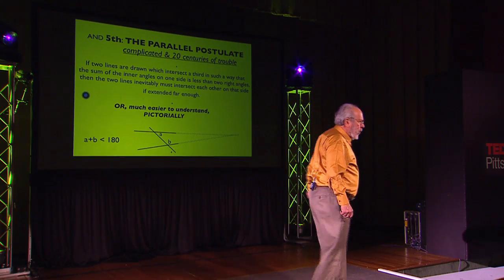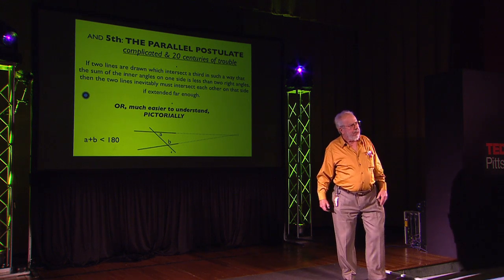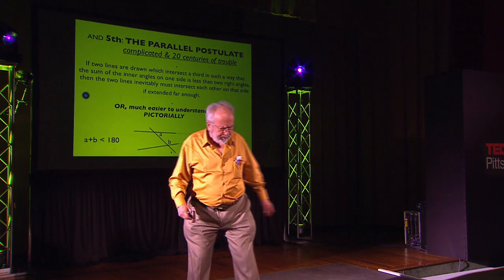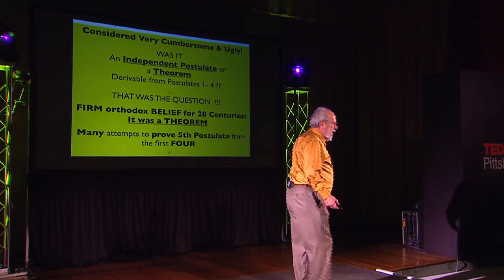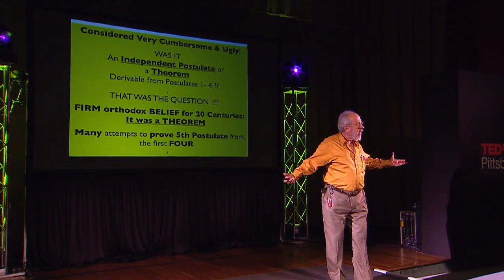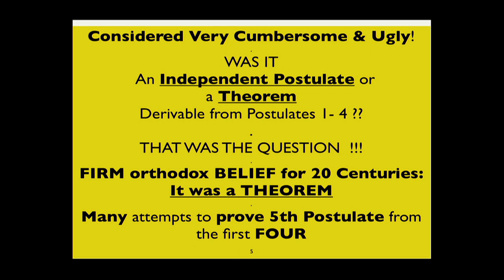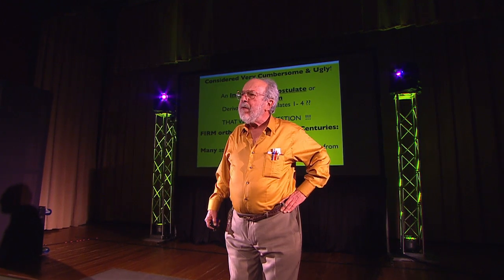It's much easier to understand pictorially. We have two lines that are cut by a third line, and if the two angles A and B add up to less than 180 degrees, then the original two lines must intersect at some point if extended far enough. It becomes a simple thing to understand. But it was immediately considered a very, very cumbersome and ugly postulate, and very soon thereafter it became a firm orthodox belief that the fifth postulate was not an independent postulate — that it could be derived from the first four postulates.